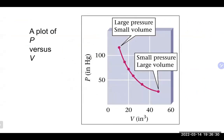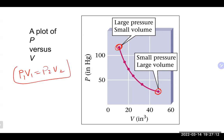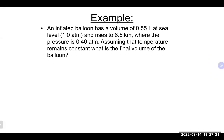Looking at a graph of pressure versus volume, at a very small volume we see very high pressure, and as the volume gets larger the pressure decreases. For any given gas, if you take pressure times volume at any two points on the curve, they all equal the same number — that's why we get P₁V₁ = P₂V₂. Let's try one: an inflated balloon has a volume of 0.55 liters at one atmosphere. It goes up to 6.5 kilometers where the pressure is 0.4 atmospheres. Assuming temperature remains constant, what will the final volume of the balloon be?